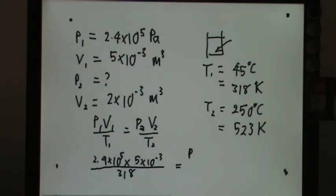P2 is unknown, V2 is given. We can save our trouble by canceling 10 power of negative 3. We can even simplify further because 2.4 divided by 2 is 1.2.